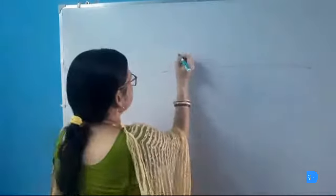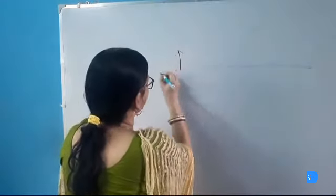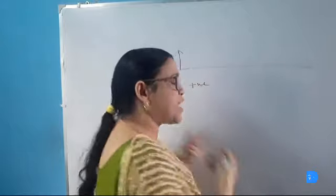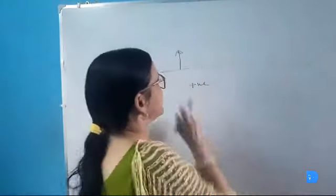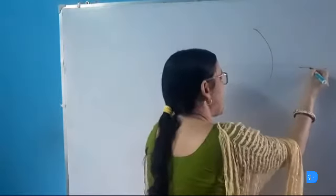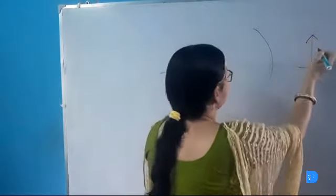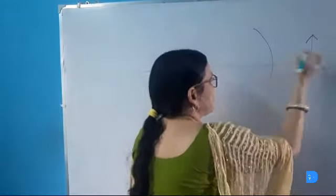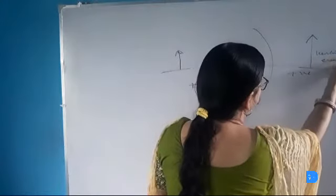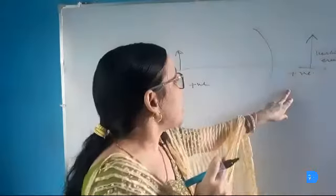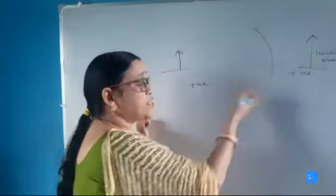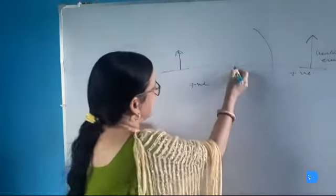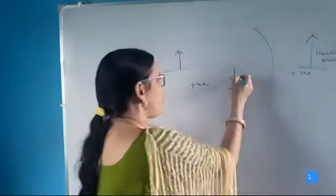The objects are always placed above the principal axis, so the height of the object is always considered as positive in any mirror. But if the image is formed behind the mirror and above the principal axis, then the height of the image will also be considered as positive because the image is virtual and erect. But in case of real and inverted image, when the image is formed in front of the mirror, the height of the image will be considered as negative because it is formed below the principal axis.